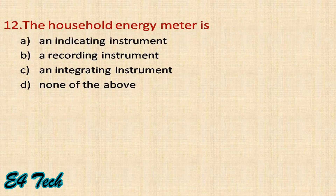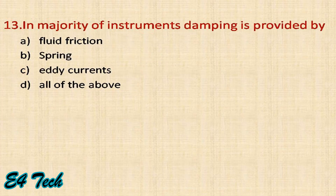The household energy meter is an integrating instrument. In the majority of instruments, damping is provided by the eddy current damping system, which is the most commonly used damping system.